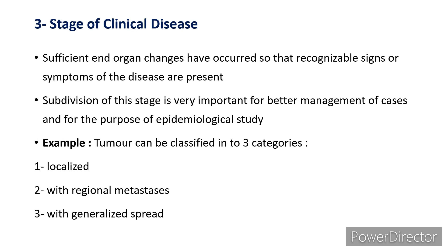Now coming to the third stage — stage of clinical disease. In this stage, sufficient end organ changes have occurred along with the pathogenic changes from the second stage, so that recognizable signs or symptoms of the disease are present. Subdivision of this stage is very important for better management of cases and for epidemiological study. For example, a tumor can be classified into three categories: localized, with regional metastasis, and with generalized spread, based on end organ or tissue changes.